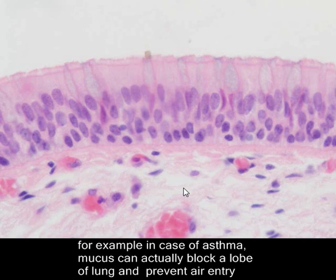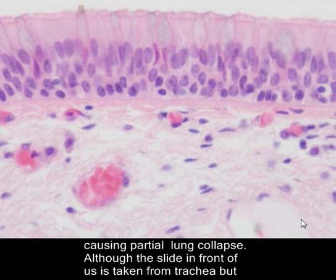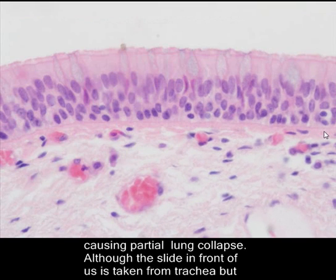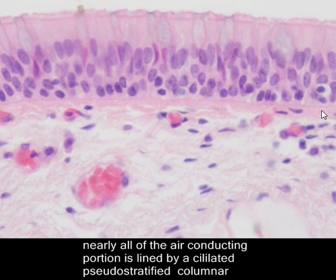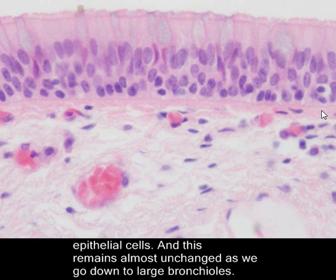For example, in the case of asthma, mucus can actually block a lobe of the lung and prevent air entry, causing partial lung collapse. Although this slide in front of us is taken from the trachea, nearly all of the air-conducting portion is lined by ciliated pseudo-stratified columnar epithelial cells.